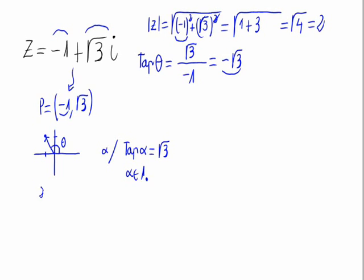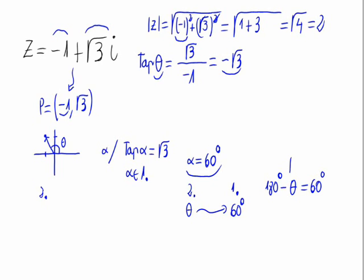The tangent of alpha equals the square root of 3. Remembering some trigonometry, the angle whose tangent is the square root of 3 is 60 degrees. So the angle theta is in the second quadrant, and the distance from the second quadrant to the first quadrant is 60 degrees. The formula to move an angle from the second quadrant to the first is: 180 degrees minus theta equals 60 degrees, which is angle alpha.